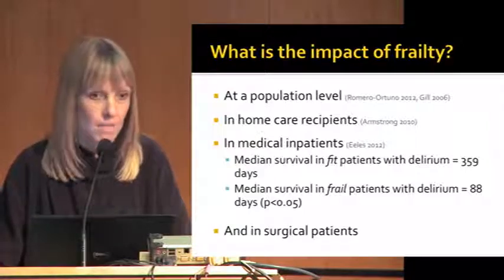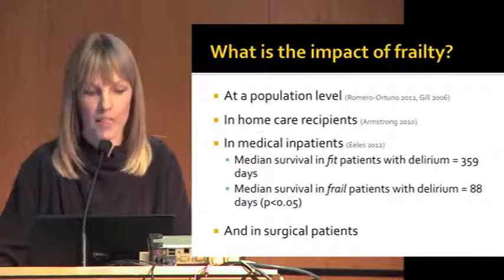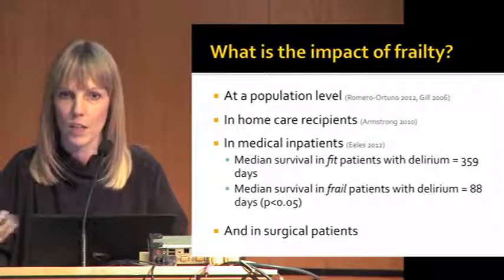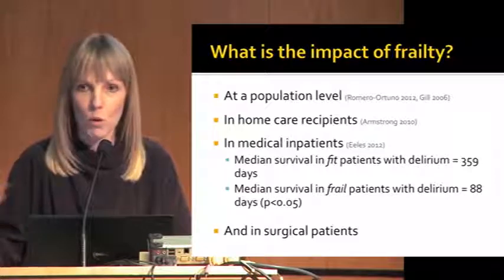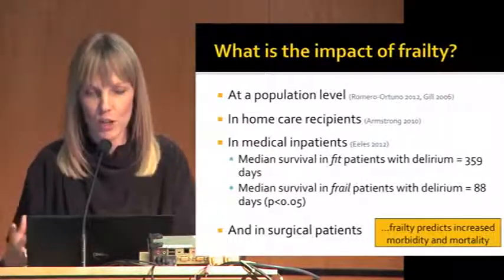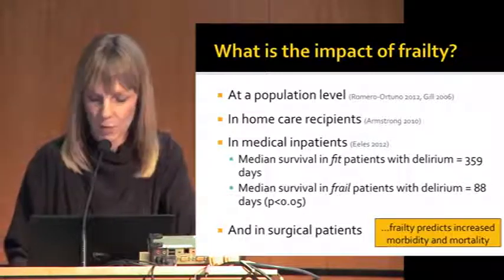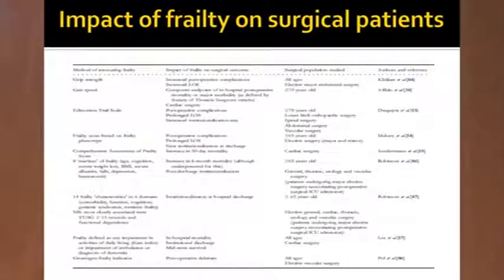So if we've chosen a tool and measured frailty, what's the point? We know that on a population basis frailty ultimately leads to dependence, hospitalization, institutionalization, and death. We see this in home care recipients who are much more likely to go on to increased levels of dependence, and when coupled with other geriatric syndromes - for example delirium - there are much worse survival outcomes. In our surgical population it's no surprise that frailty is also predictive of increased morbidity and mortality. This slide summarizes the main papers in elective surgery looking at the impact of frailty, highlighting the heterogeneity in studies with numerous different tools and outcome measures used.